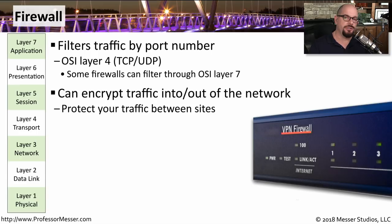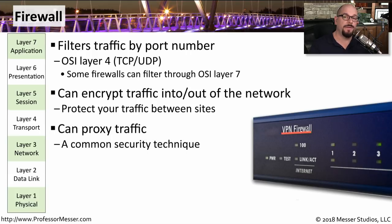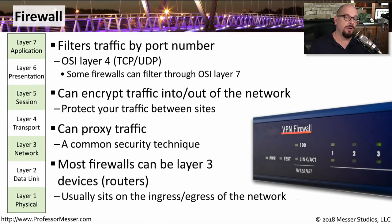Many firewalls also provide other features. You could configure your firewall as a VPN endpoint at your main location and configure another firewall as a VPN endpoint at a remote site, allowing you to encrypt all traffic flowing between locations. Some firewalls can be configured as a proxy — they stop the network communication, make the request on your behalf, receive the response, verify it's appropriate, and then send that traffic to your workstation. Many firewalls can also be configured as a Layer 3 device, routing traffic in and out of the internet, combining security decisions with routing between different IP subnets.